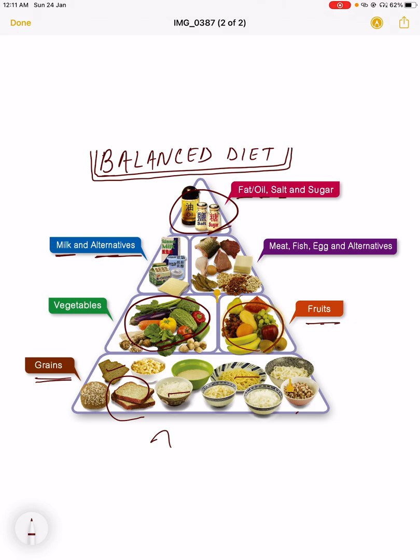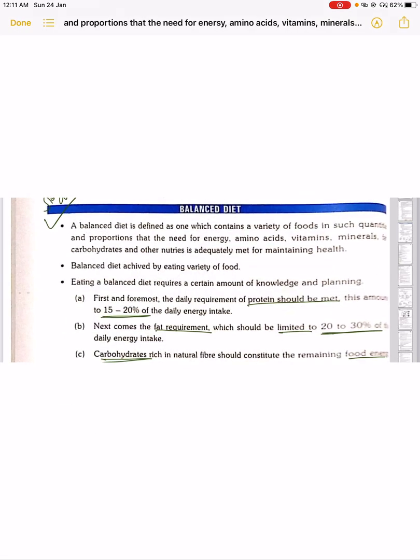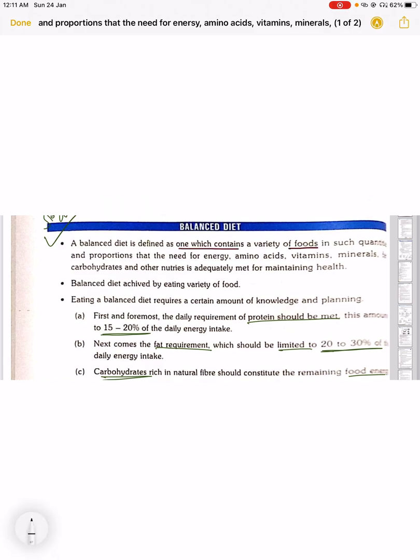So we'll see what is the definition of diet. A balanced diet is defined as one which contains a variety of food in such quantities and proportions that the need for energy, amino acids, vitamins, minerals, and carbohydrates and other nutrients is adequately met for maintaining health. This is known as balanced diet.